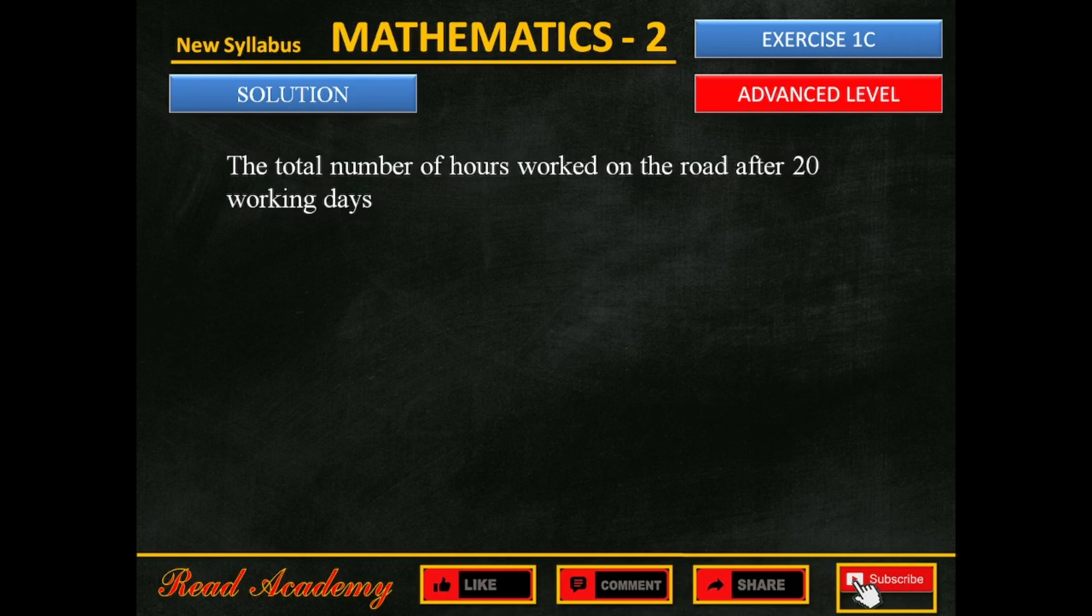The total number of hours worked on the road after 20 working days equals the number of days multiplied by the number of men multiplied by the number of hours. The number of days is 20, the number of men is 50, and the number of hours is 8. Multiply these numbers and the total number of hours after 20 working days is 8,000 hours.